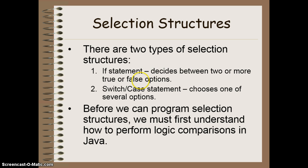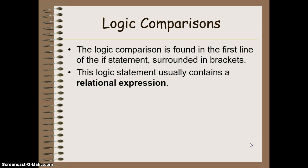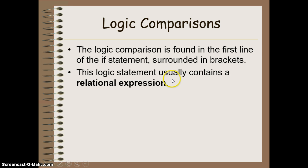But before we can program the selection structures we have to understand how we can perform logic comparisons. The first line of an if statement, surrounded in smooth brackets, will always contain your logic comparison. And usually it's some sort of relational expression. In other words, it's going to be something we're going to compare if one thing is greater than, less than, or equal to another value.